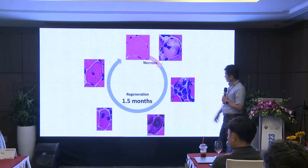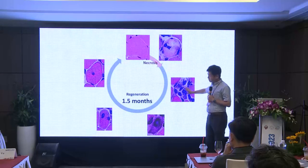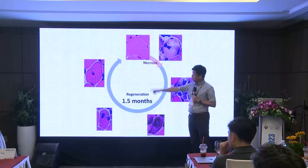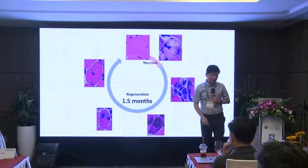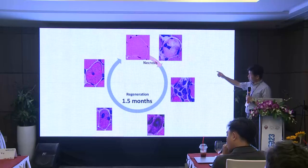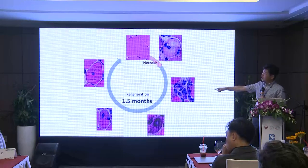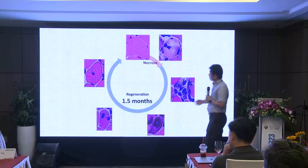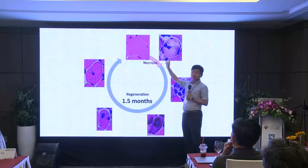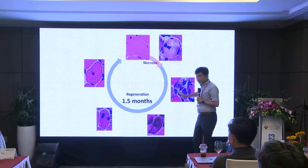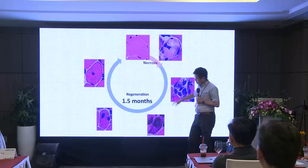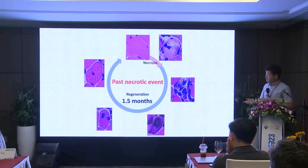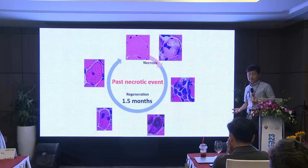Within 24 hours after necrosis we see necrotic fibers with macrophage invasion. After that, regeneration starts — very early regeneration at maybe 2-3 days, progressing through stages at about 5-7 days, then 2 weeks, then 3 weeks. In total, they say it takes about one to one and a half months to return to normal. So if you see regenerating fibers, there was a necrotic event just recently — within the past one and a half months.